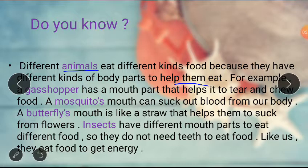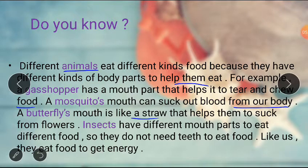For example, a grasshopper has a mouth part that helps it to tear and chew food. A mosquito's mouth can suck out blood from our body. A butterfly's mouth is like a straw that helps them to suck nectar from plants. Their mouth parts are different and they help them eat their food.